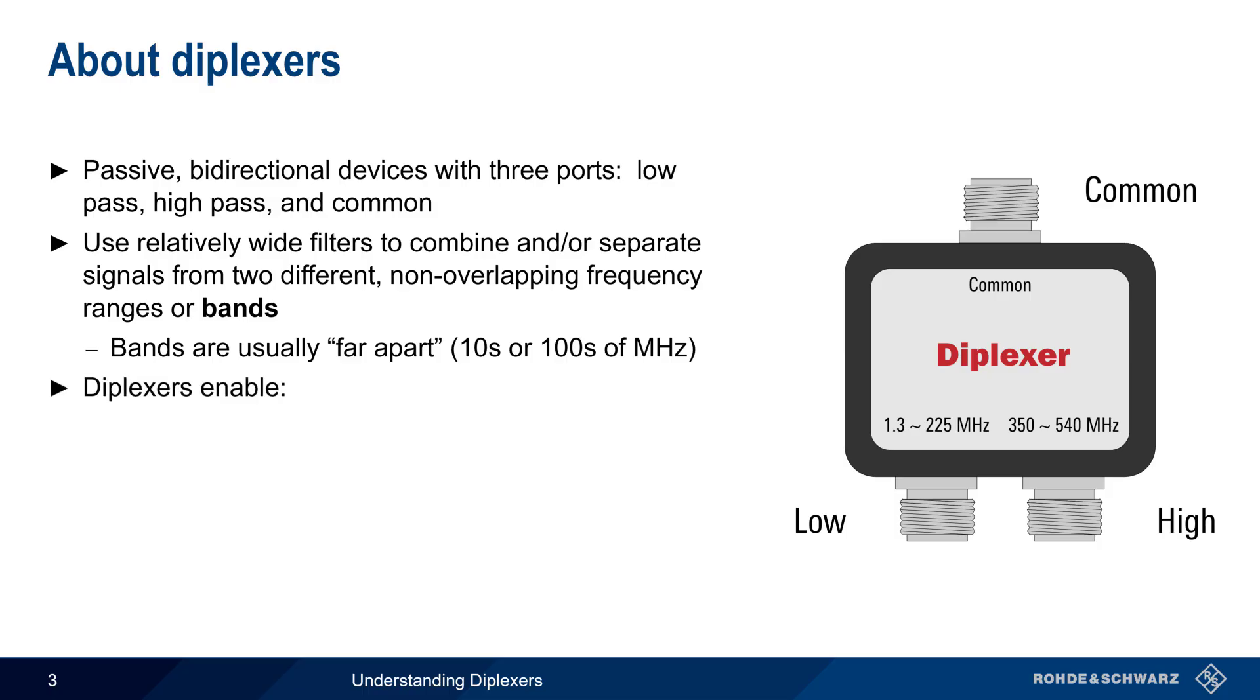Diplexors are most often used to enable two devices, transmitters or receivers, to share a single antenna. But they also allow a single device to use two different antennas. We'll look more closely at these two scenarios on the next slide.